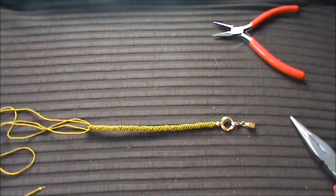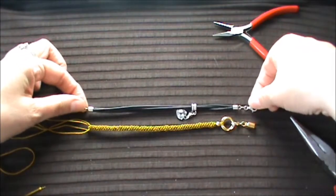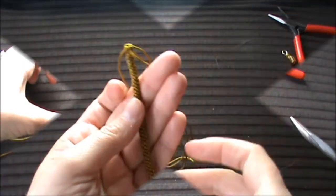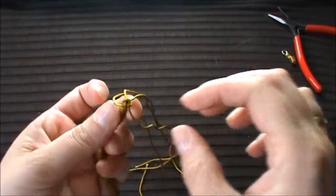The easiest way is to use a bracelet you already have and to use it as a pattern. When you think that you're ready with knotting, you can take the barrel end cap and put the knotted part into it.